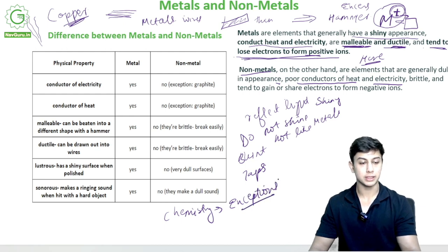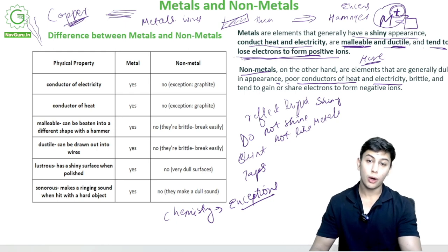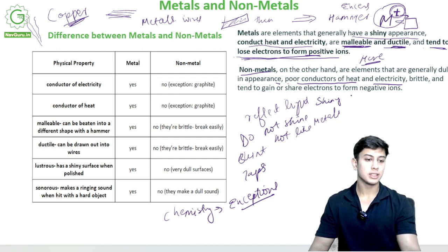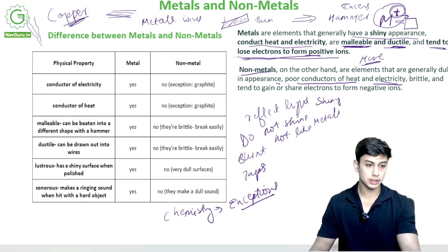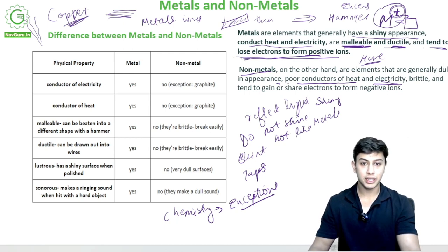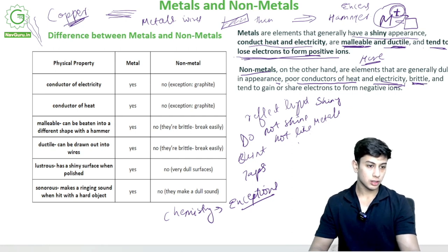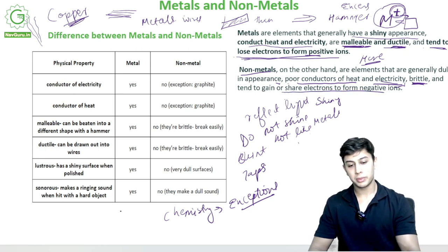When I say poor conductors of heat, will all non-metals act as poor conductors? No — there will be one or two exceptions. Similarly for electricity: most non-metals will not conduct electricity, but there will be one or two which will. For example, carbon is a non-metal, and a form of carbon called graphite is able to conduct electricity. Non-metals are also brittle.